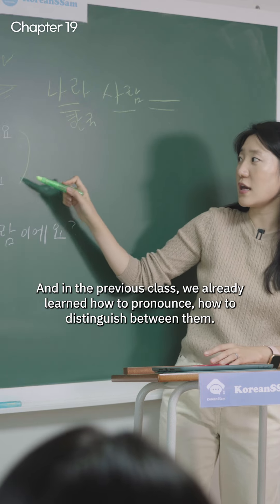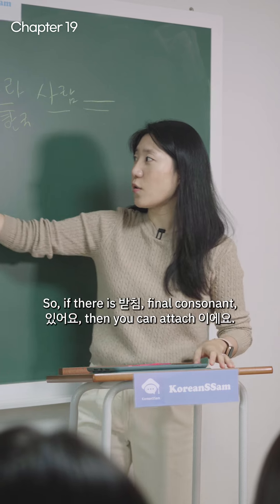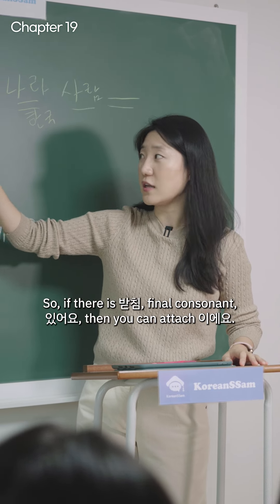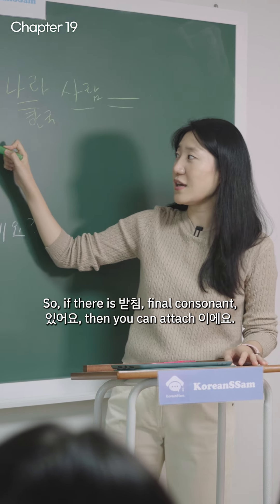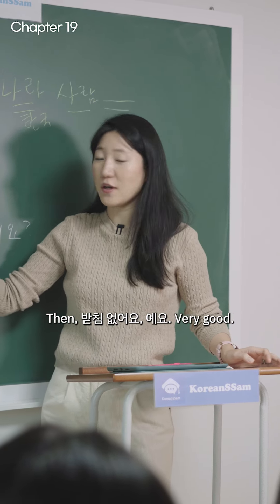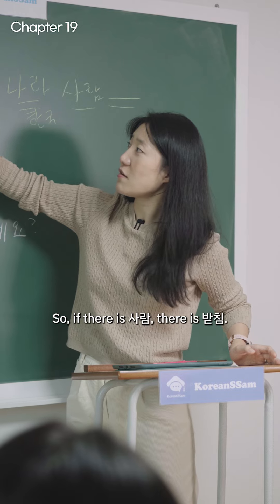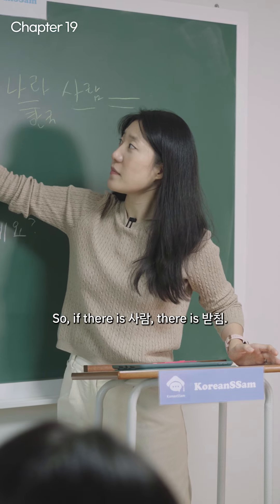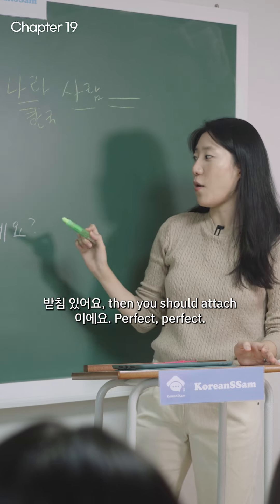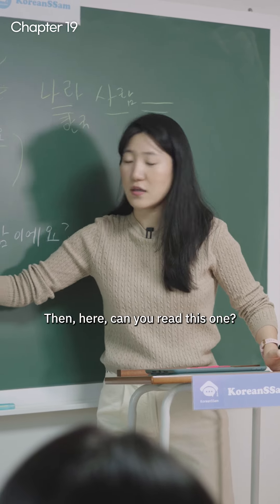In the previous class we already learned how to distinguish between 이에요 and 예요. If there is a 받침 (final consonant), then you attach 이에요. If there is no 받침, you use 예요. So for 사람, there is a 받침, so you attach 이에요. Perfect.